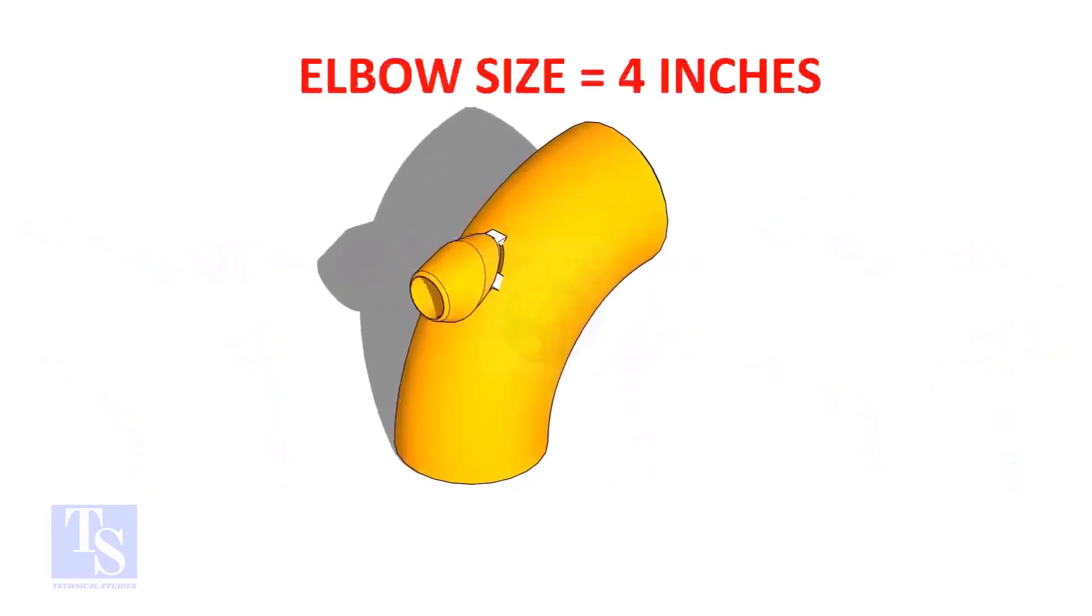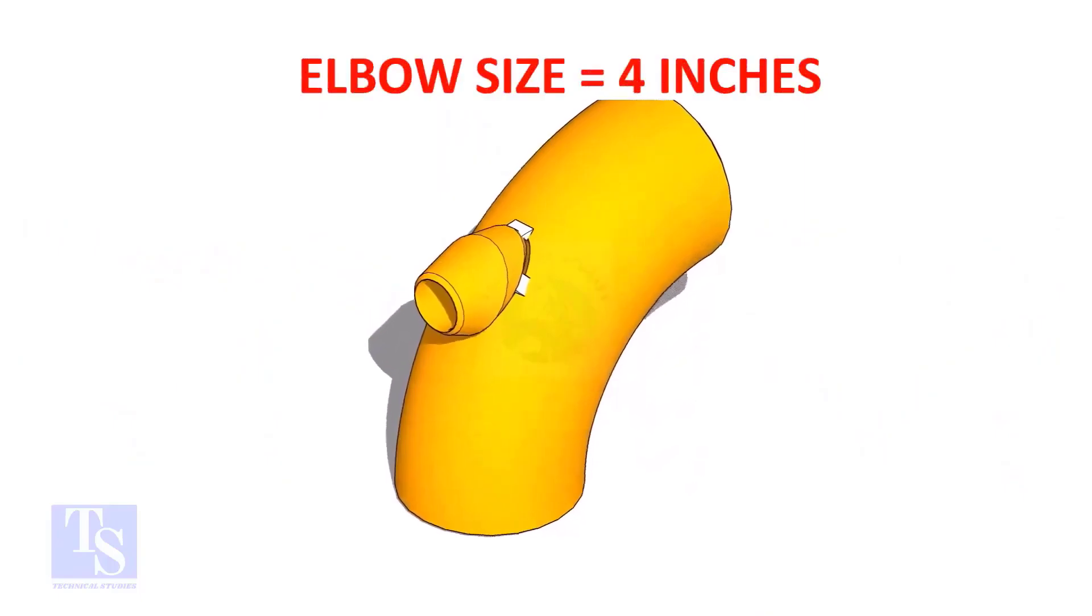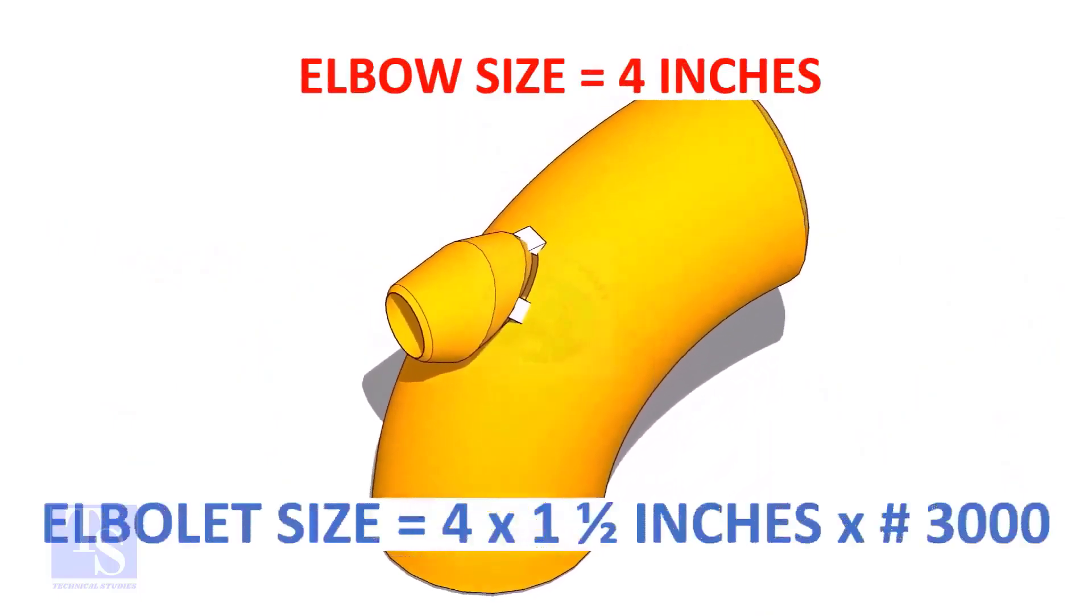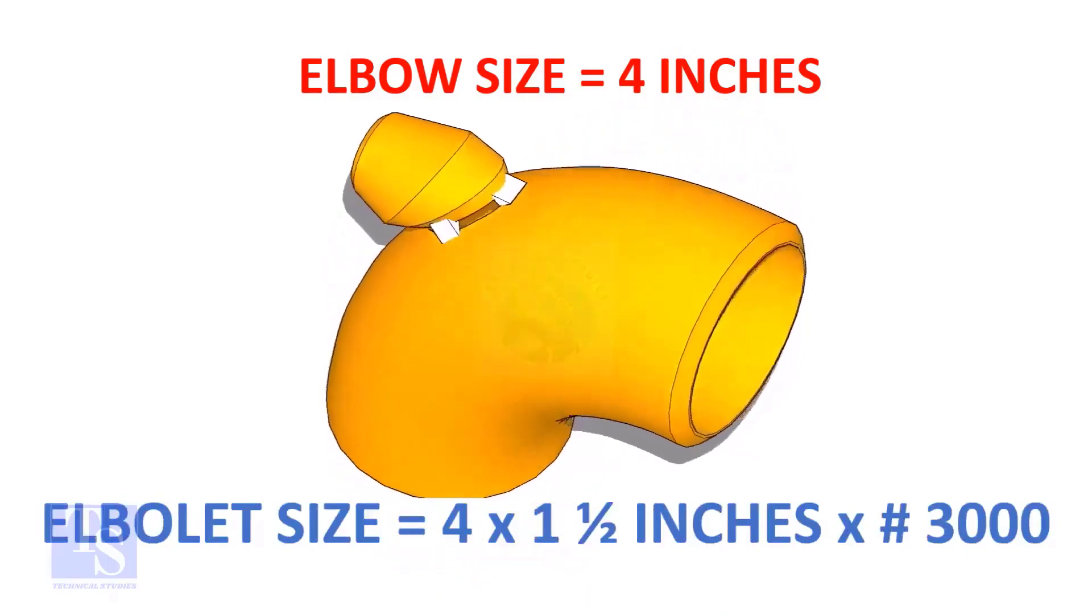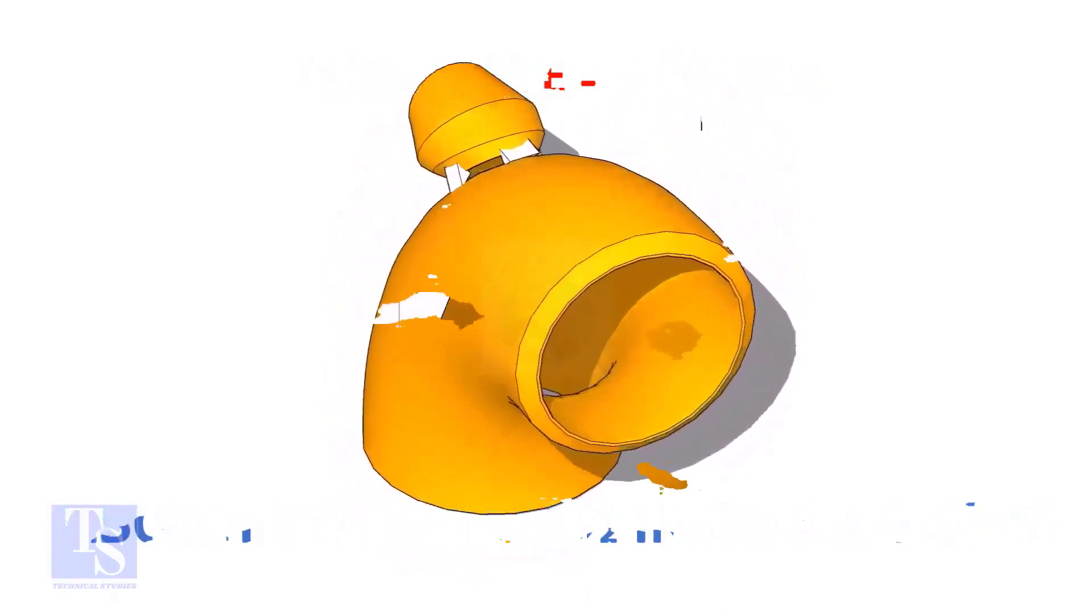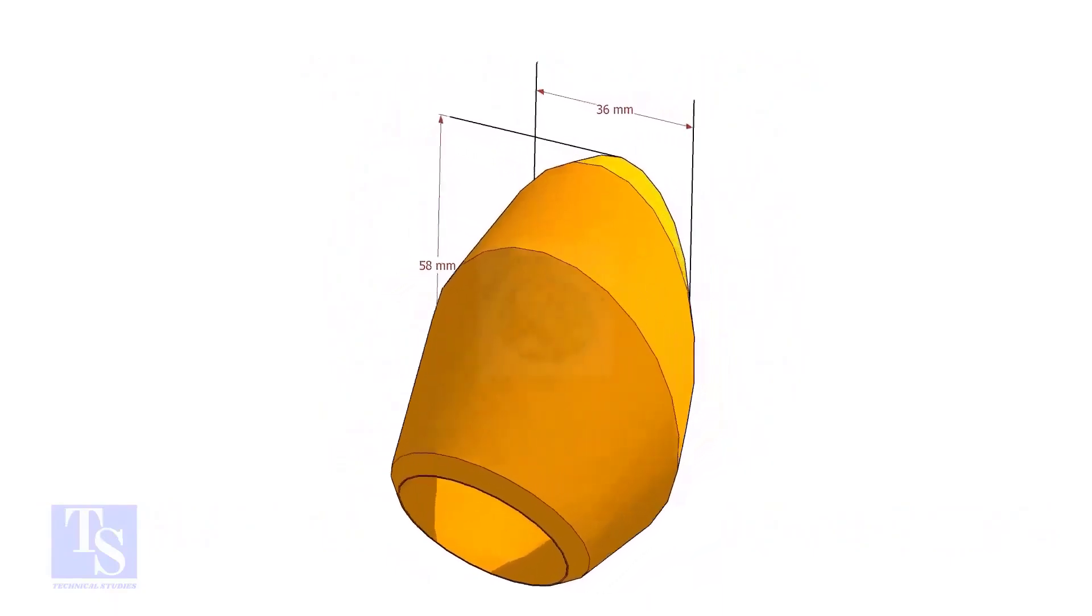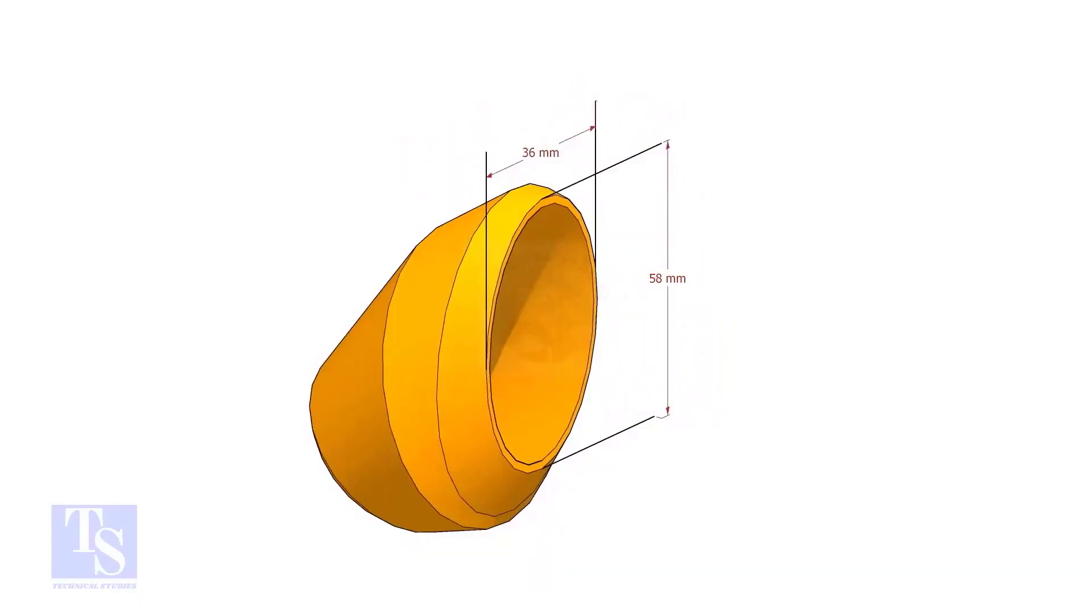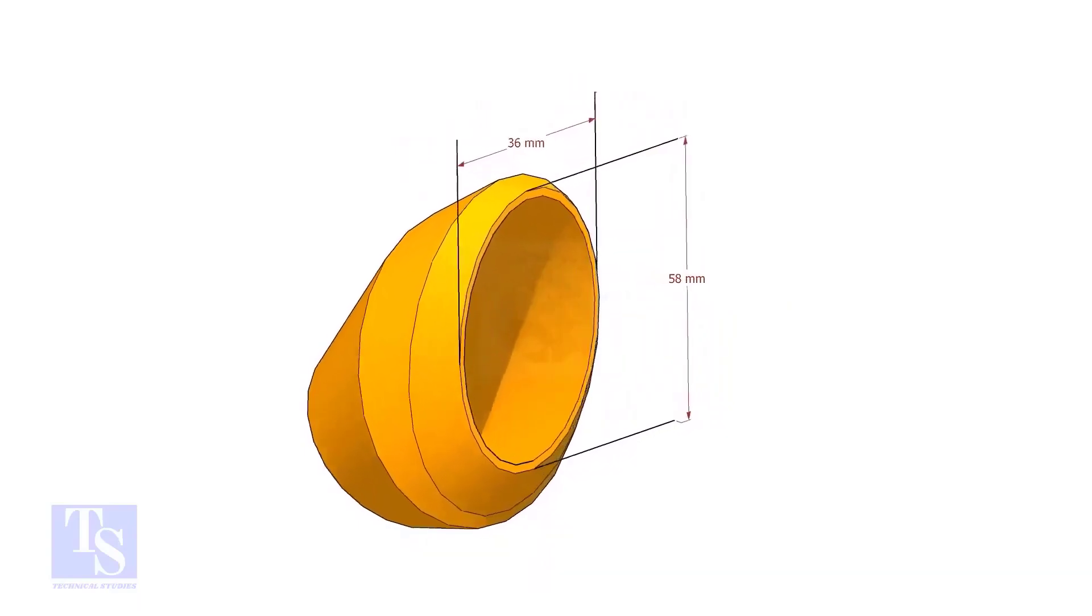The size of our elbow is four inch, and the size and rating of the elbowlet is one and a half inch and three thousand pounds respectively. The bottom opening size of the elbowlet is 36 millimeters into 58 millimeters. Please note down these dimensions.